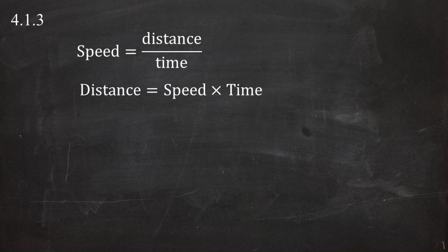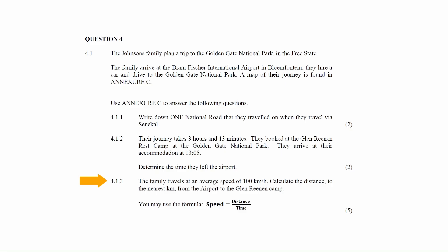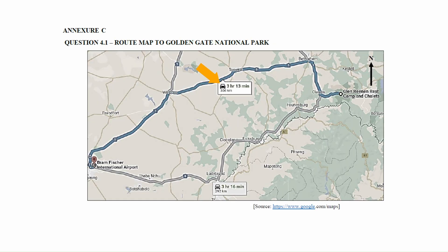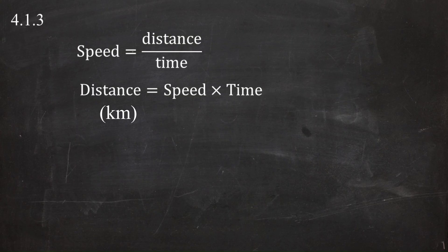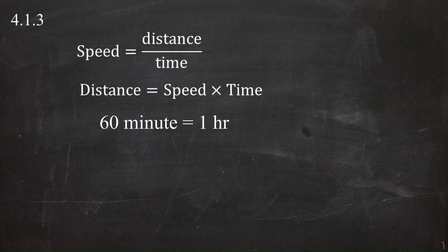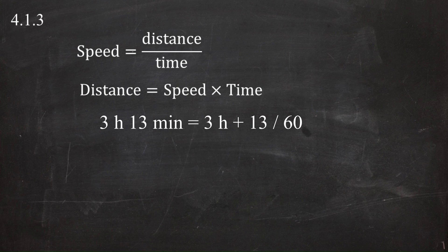We are asked to calculate distance in kilometers. We are given speed as 100 km per hour and time as 3 hours and 13 minutes. Since speed is in kilometers per hour, we must convert the time to hours only. We know there are 60 minutes in an hour, so 3 hours and 13 minutes equals 3 plus 13 divided by 60 hours.